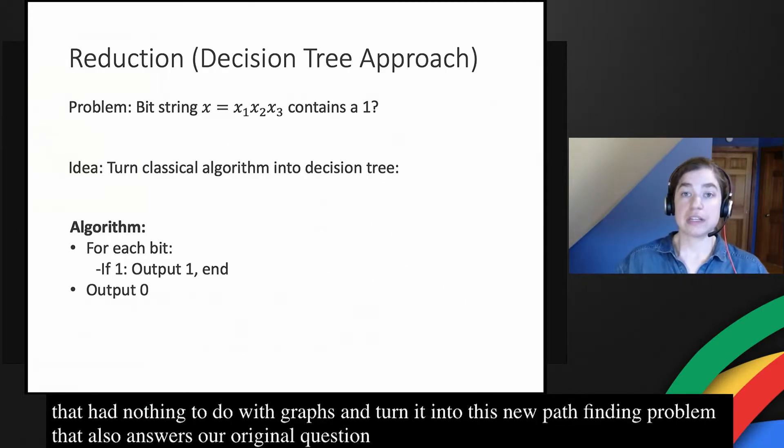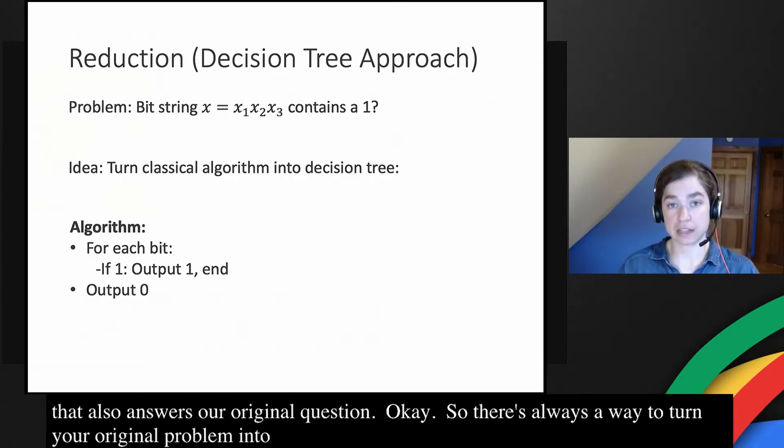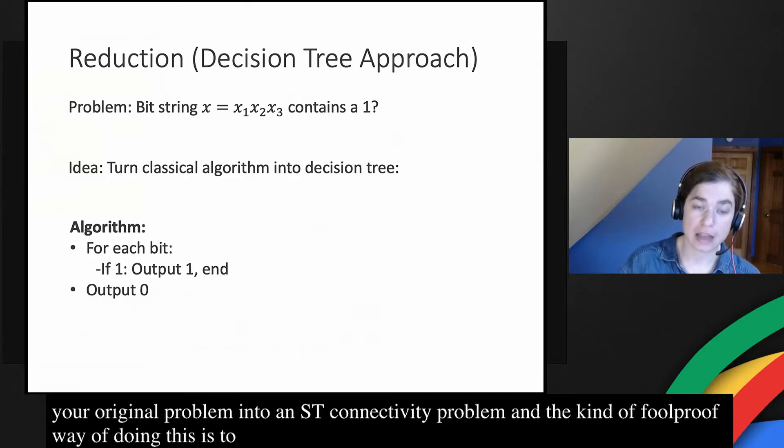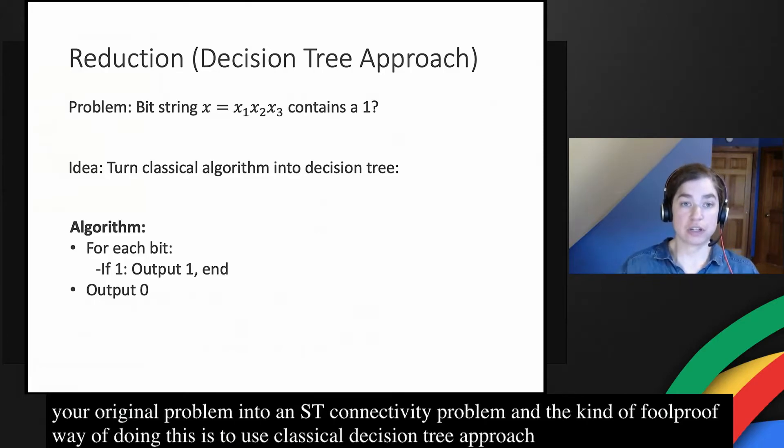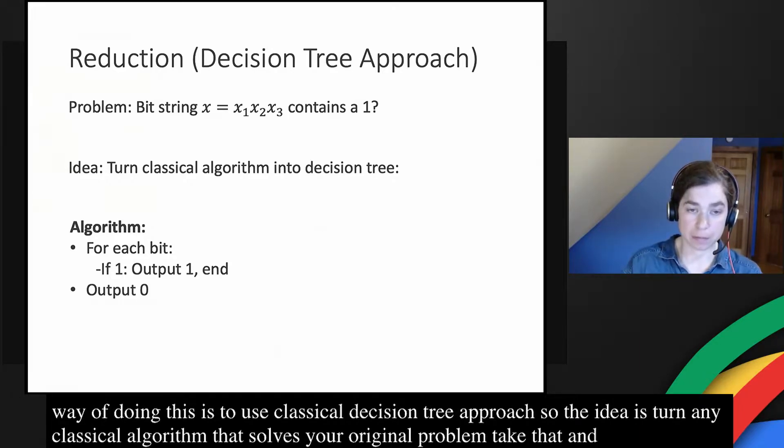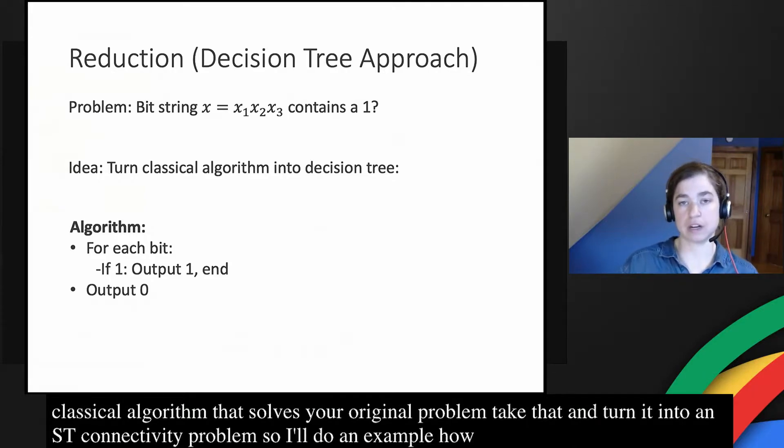There's always a way to turn your original problem into an ST connectivity problem. And the kind of foolproof way of doing this is to use a classical decision tree approach. The idea is you just turn any classical algorithm that solves your original problem, you can take that and turn it into an ST connectivity problem.